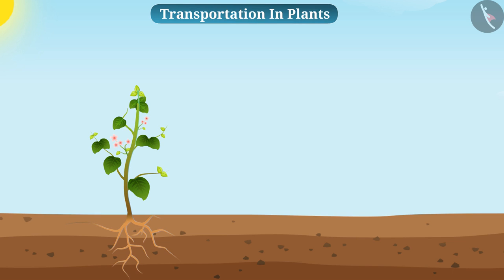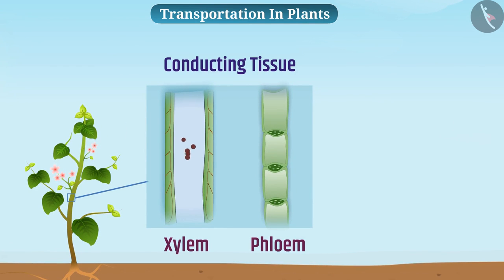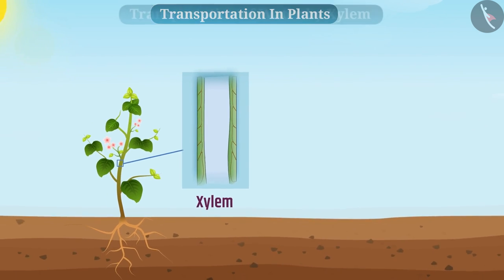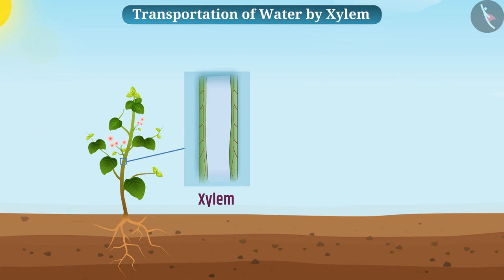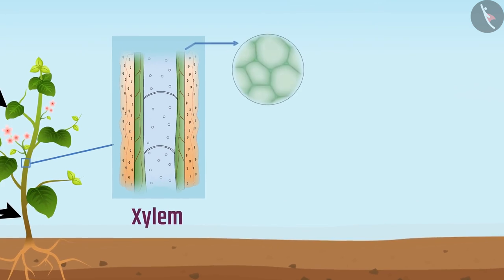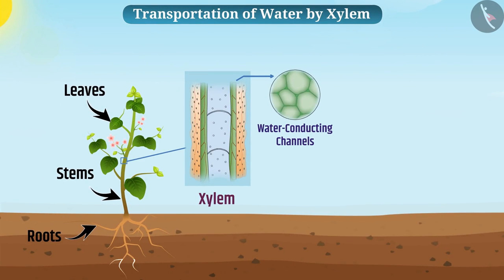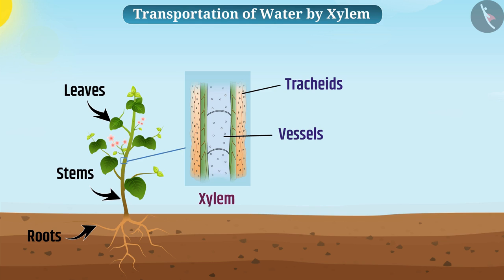In plants, the function of transportation of various substances takes place with the help of conducting tissue — xylem and phloem. Xylem carries water and minerals, while phloem carries food and other substances. Tracheids and vessels of roots, stems, and leaves form a continuous network of water-conducting channels in the xylem tissue, connected to all parts of the plant.